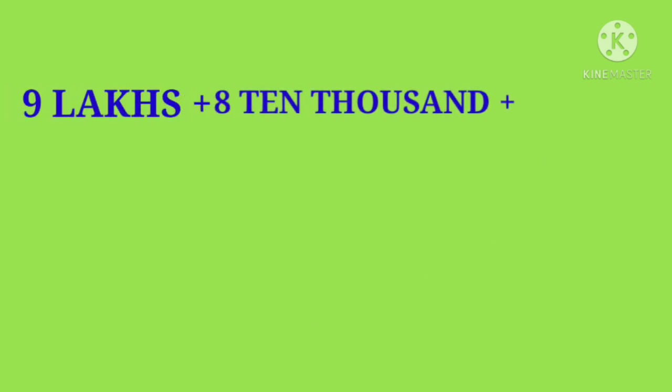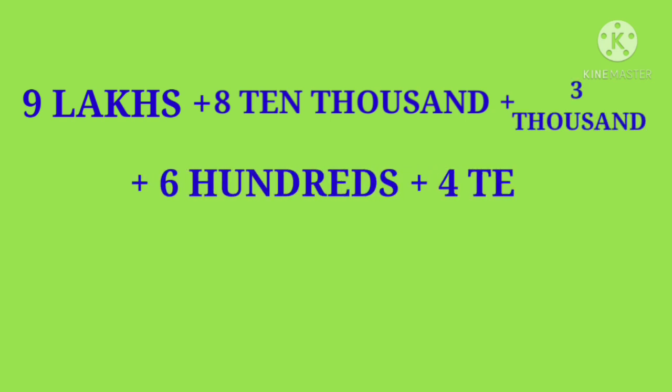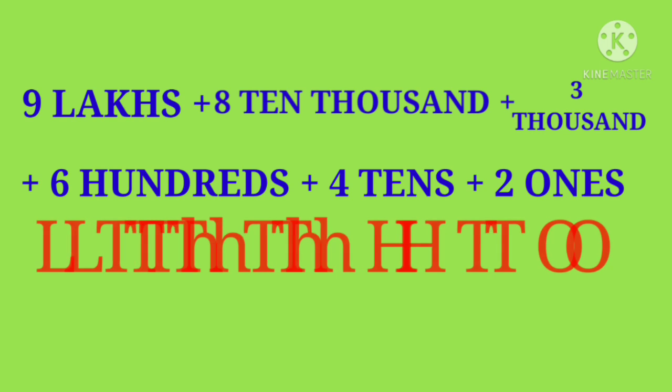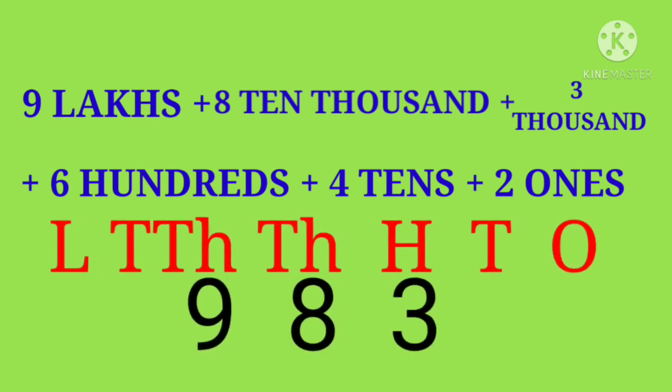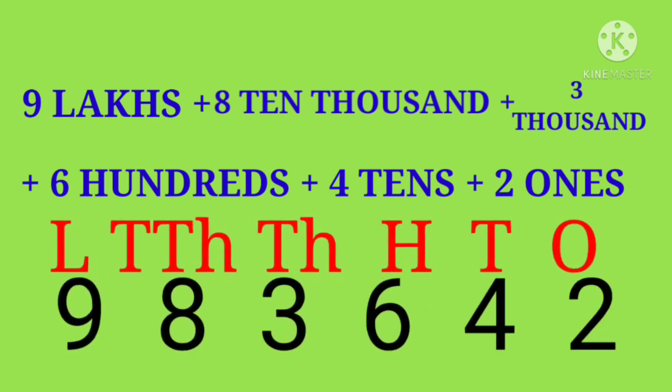Another example: 9 lakhs plus 8 ten thousand plus 3 thousand plus 6 hundreds plus 4 tens plus 2 ones. Write down the place values. Put 9 under lakhs, 8 under ten thousands, 3 under thousands, 6 under hundreds, 4 under tens, 2 under ones. And put the comma between 100 and 1,000 and between lakhs and ten thousands.